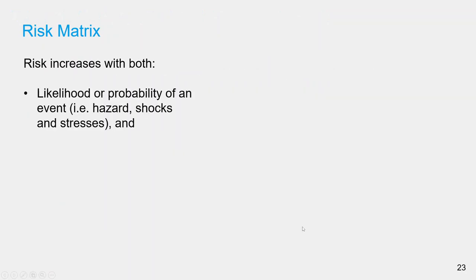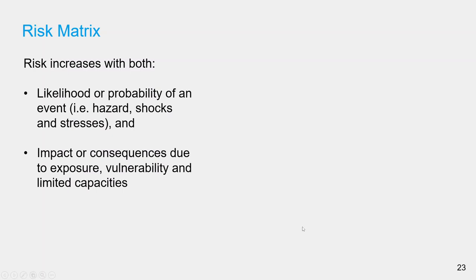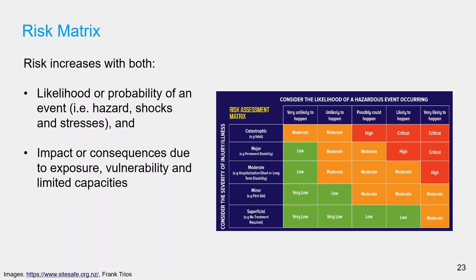Let us look at the idea of the risk matrix. We know that risk increases with both the likelihood and the impact of an event. Traditionally, we use a so-called risk matrix to combine these two variables. The x-axis is the likelihood, ranging from very unlikely to very likely to happen. The y-axis is the severity or impact of the event, ranging from superficial to catastrophic. Combining these two using equation 2, we can calculate the risk.